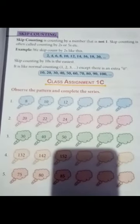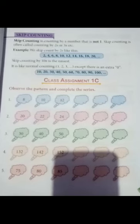In skip counting by 10, it is like normal counting: 1, 2, 3. We can normally count 1, 2, 3, 4, 5, 6, 7, 8, 9, 10.